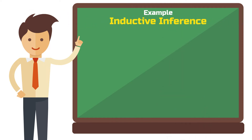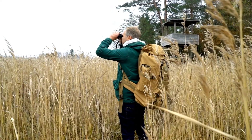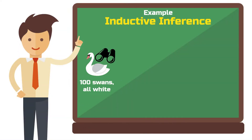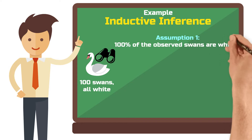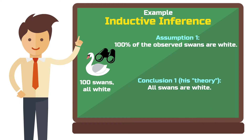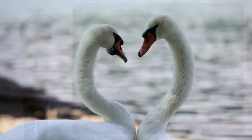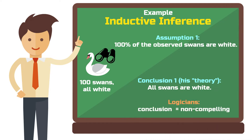To better understand the problem of induction, let's look at an example of inductive inference. An ornithologist conducts an observation in nature: during his research expedition he observes 100 swans, all of which are white. Assumption 1: 100% of the observed swans are white. From this he concludes — Conclusion 1: all swans are white. If he reasons in this way, it doesn't matter how many more swans he observes. He could observe 100,000 swans. The conclusion remains what logicians describe as non-compelling — the 100,001st swan could be black and his conclusion would be false.